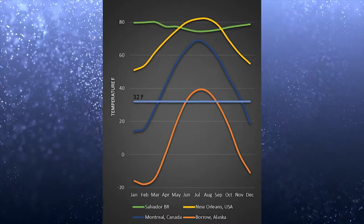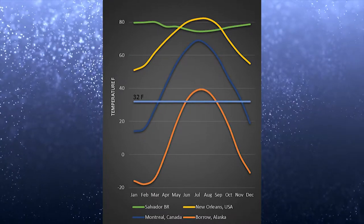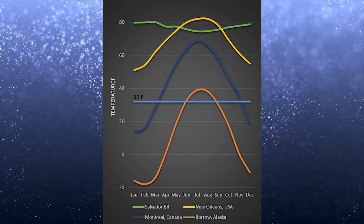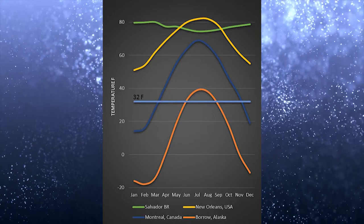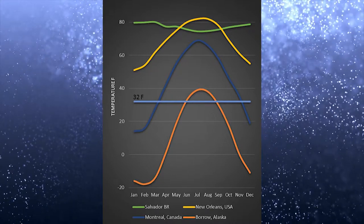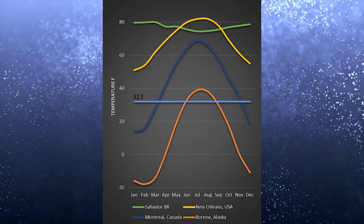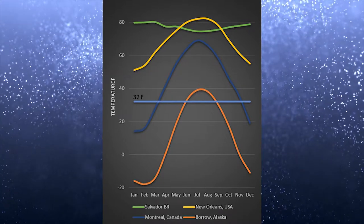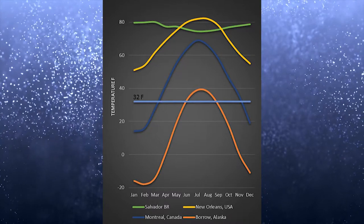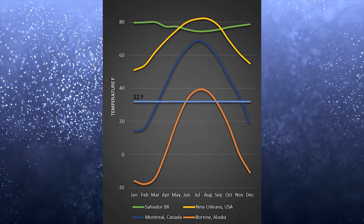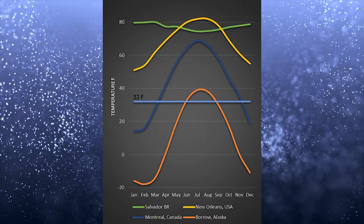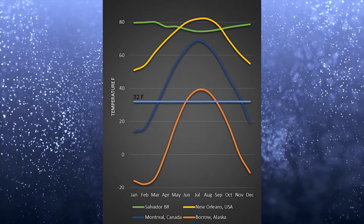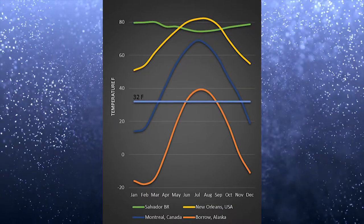Look at the example here. You have four cities: Barrow, Alaska; New Orleans; Salvador, Brazil; and Montreal. Each one has a different latitude. Look at the correlation between the temperature, especially the temperature range.